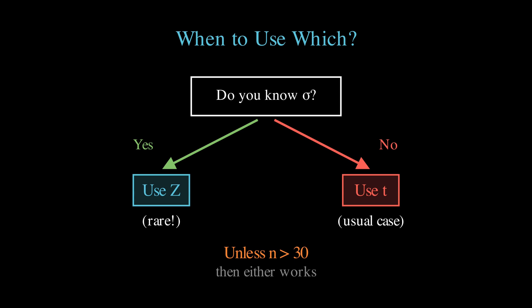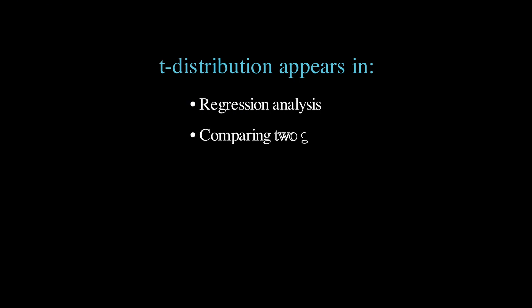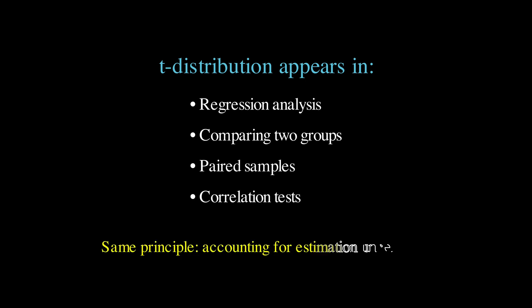And even then, using the t-distribution isn't wrong, it's just that the results will be virtually identical to using the normal distribution. The t-distribution also shows up in contexts like regression analysis and comparing means between two groups. And in each case, the underlying principle is the same. We're accounting for the extra uncertainty that comes from estimating parameters from our data, rather than knowing them exactly.